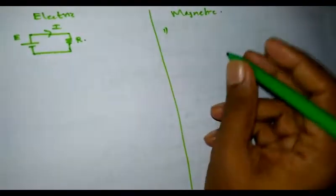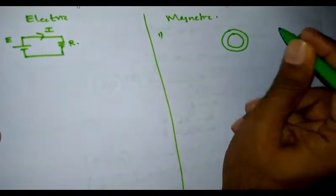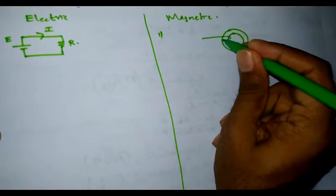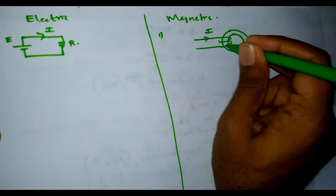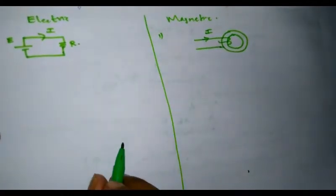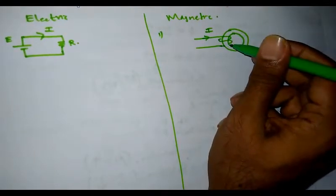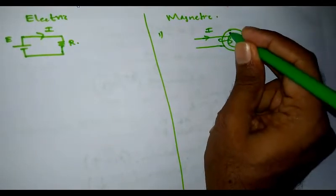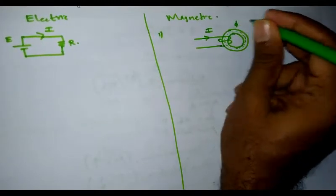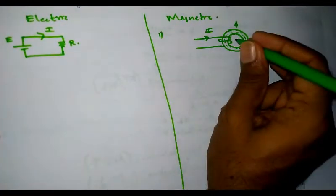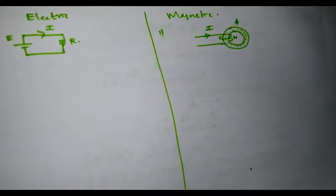Similarly, I can represent a magnetic circuit as a circular magnetic circuit. This is a coil wound on part of the circuit, and a current I is allowed to flow in the circuit, and MMF is set up in the circuit. MMF is generated as a result of the number of turns N and current I, which sets up a flux phi across the magnetic circuit. N is the number of turns of the coil. This is a representation of a simple magnetic circuit.